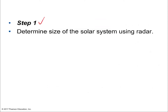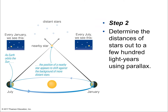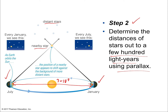Step one: determine the size of the solar system using radar, which is important for knowing exactly how large Earth's orbit is around the sun, since we need that for accurate parallax measurements. Step two: determine the distance of stars out to a few hundred light years using parallax — measuring the relative location of a nearby star to the distant star background in January, then making the same measurement in July, using a baseline of about 3×10⁹ kilometers. Then we measure the angle of parallax and use a formula to calculate the star's distance.